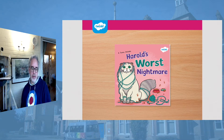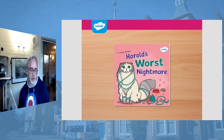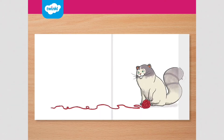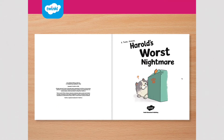What I'm going to do is make it so that you can see the story full screen and we will go through and begin reading. So, Harold's Worst Nightmare. I wonder what Harold's worst nightmare is going to be. This is the title page — it tells us about the story, gives us the author, the title, and normally a nice illustration as well.